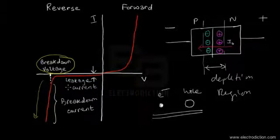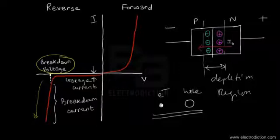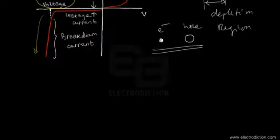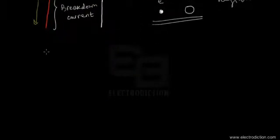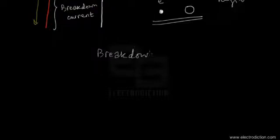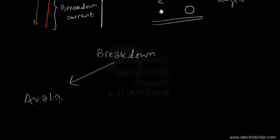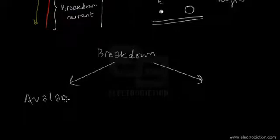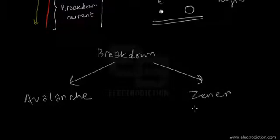Depending on the mechanisms involved, we can divide the breakdown processes into two categories: the avalanche breakdown process and the Zener breakdown process.